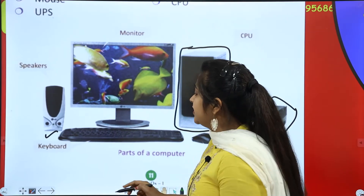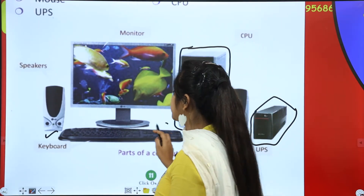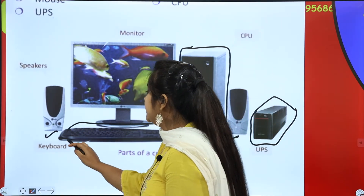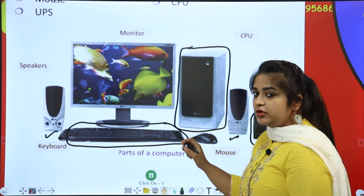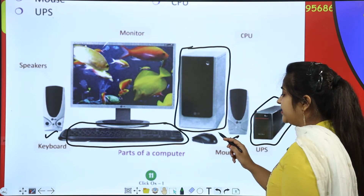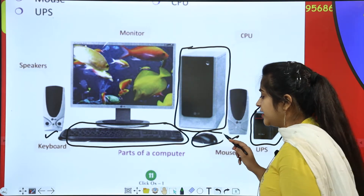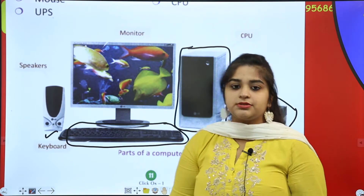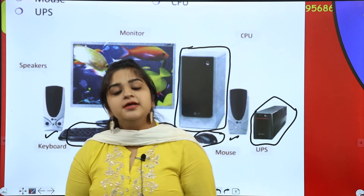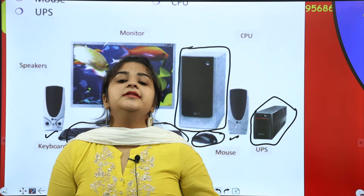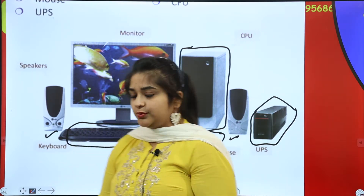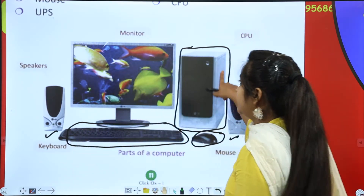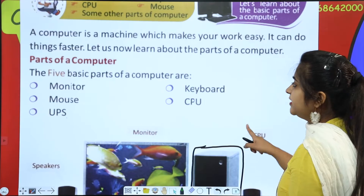Then we have the keyboard — these are our keys. And this is our small mouse. So basically, there are five main parts of a computer, and I have already explained them.